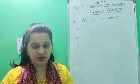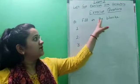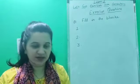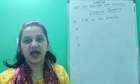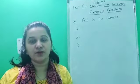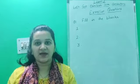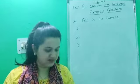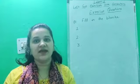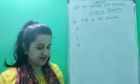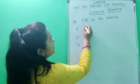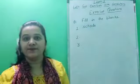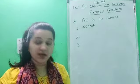Here comes the first question: fill in the blanks. The first one is — computers are used in dash. The three options are calculations, schools, and data. As you know, computers are used at home, in schools, in banks, in offices. But from these three options, the correct answer is: computers are used in schools. Write down S-C-H-O-O-L-S. Schools. Very good.